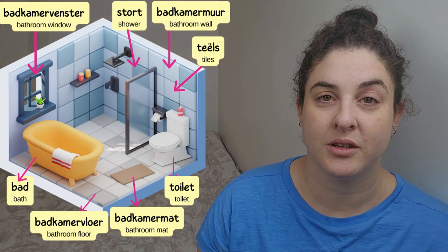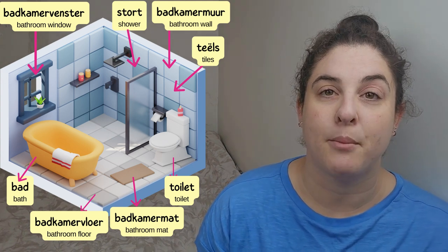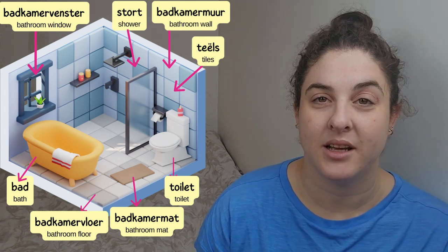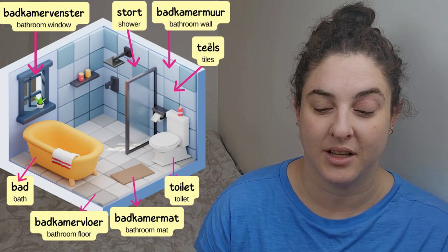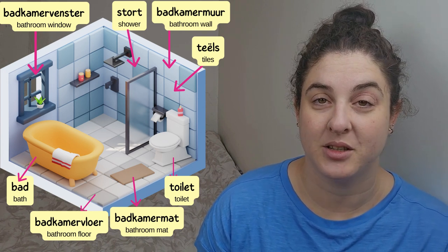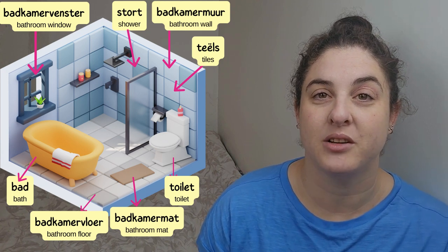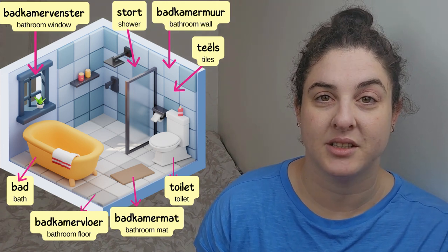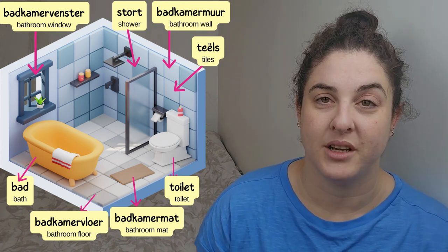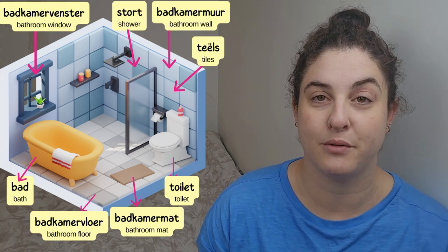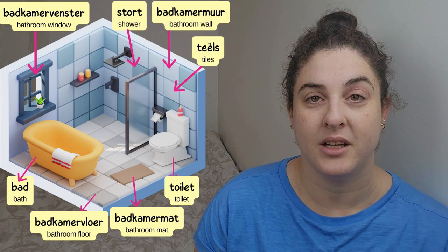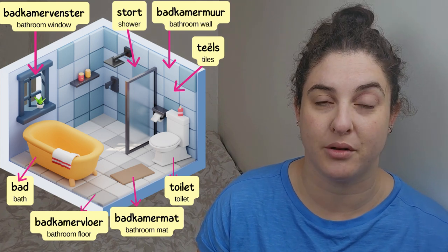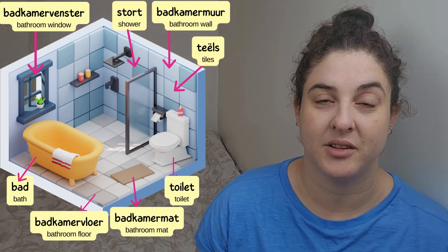Then we have 'stort' — shower. 'Badkamermuur' — bathroom wall. And then 'teëls' — tiles. Then 'toilet,' spelled exactly the same as English, just pronounced differently. Then we have 'badkamermatte' — the bathroom mat or bathroom carpet that lies in the middle of the bathroom; not specifically for the bath or the toilet, just 'badkamermatte.' Then 'badkamervloer' — the bathroom floor. And lastly 'bad' — which is a bath.